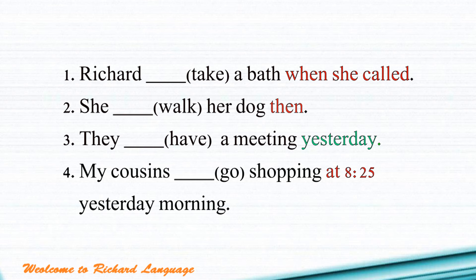Question number two: 'She ___ her dog, then.' The keyword here is 'then.' Whenever we see 'then' or 'at that time,' we can use either past simple or past continuous tense. So number two, you can write: 'She walked her dog, then' — past simple — or 'She was walking her dog, then' — past continuous. Both are correct.